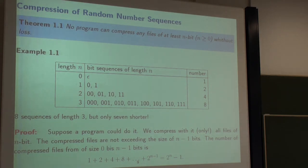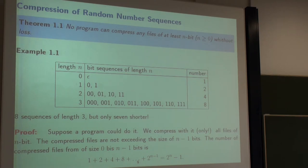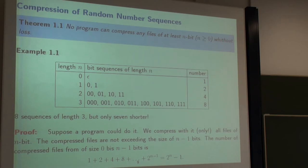I came to this theorem when I was working on random numbers and observed an internet forum. There was a person from a company in the United States who claimed they have a program that can compress arbitrary files — which is the opposite of this theorem. So either this theorem is wrong or this guy was wrong. You immediately get the intuition: this can't be true. It is impossible to write a program that compresses an arbitrary file.